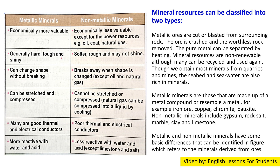The pure metal can be separated by heating. Mineral resources are non-renewable, although many can be recycled and used again. We obtain most minerals from quarries and mines, though the seabed and seawater are also rich in minerals. Metallic minerals are those made up of metal compounds and resemble a metal — for example, iron ore, copper, chromite, and bauxite.